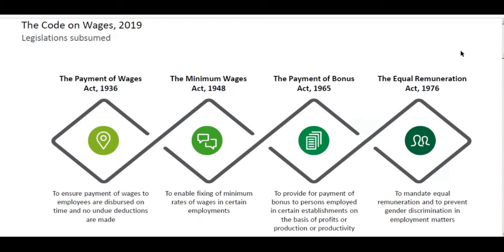The Minimum Wages Act 1948 was implemented throughout India — except Jammu and Kashmir at that time — one year after Indian independence. This act was implemented to enable fixing of minimum rates of wages in certain employment, because otherwise employers could pay workers very little for long hours of work.